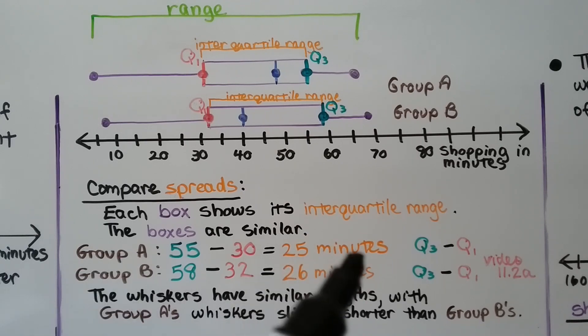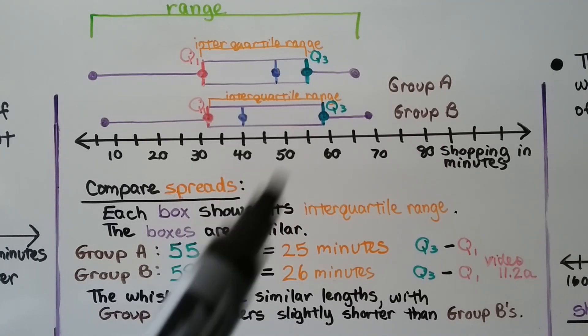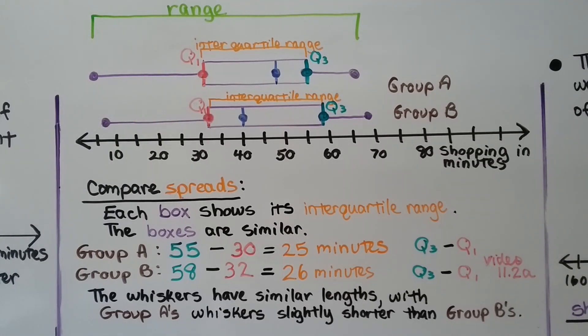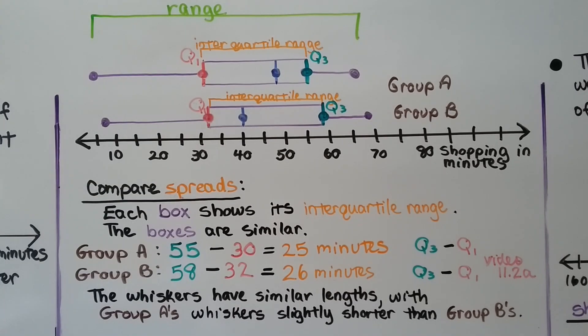For group A, we do Q3 minus Q1, as we did in video 11.2a, and we get 25 minutes for the interquartile range. For group B, we do 58 minus 32, and we get 26 minutes. And the whiskers have similar lengths, with group A's whiskers slightly shorter than group B's.